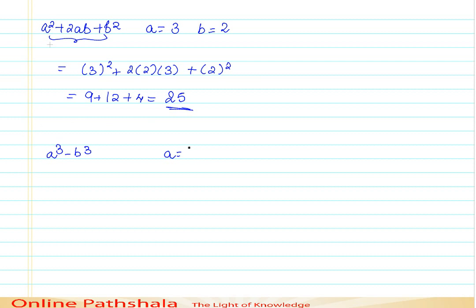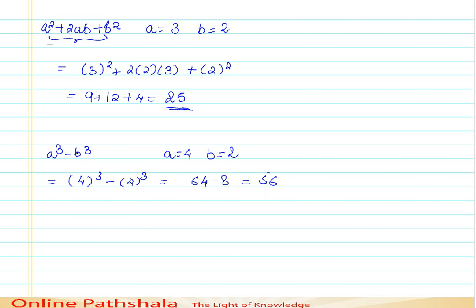Let's say a equals 4 and b equals 2. So here, a cubed minus b cubed will be 4 cubed minus 2 cubed. That comes to 64 minus 8, which is 56. So with a equal to 4 and b equal to 2, the expression a cubed minus b cubed equals 56.